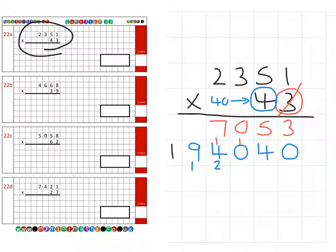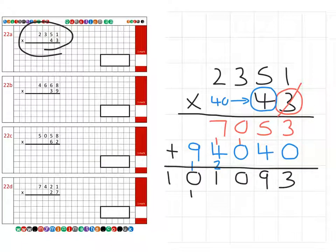Then we add the two rows together. 3 units and 0 units is 3 units. 5 tens and 4 tens is 9 tens. 0 hundreds and 0 hundreds, well that's nothing, 0 hundreds altogether. We have 7,000 and 4,000 which is 11,000, so we carry over into the 10,000s column. And we have 90,000 plus the 10,000 which is 100,000. So we have a final answer of 101,093.